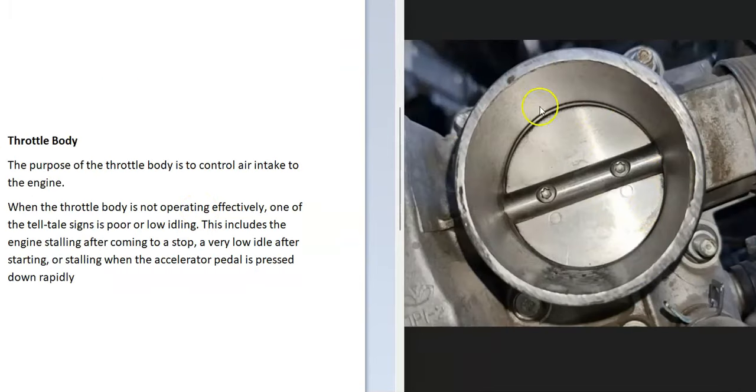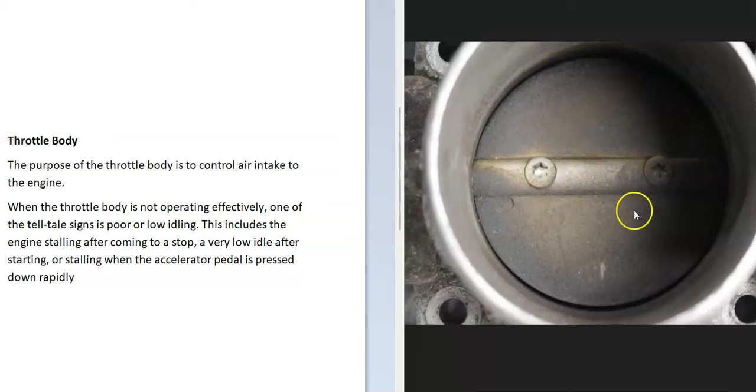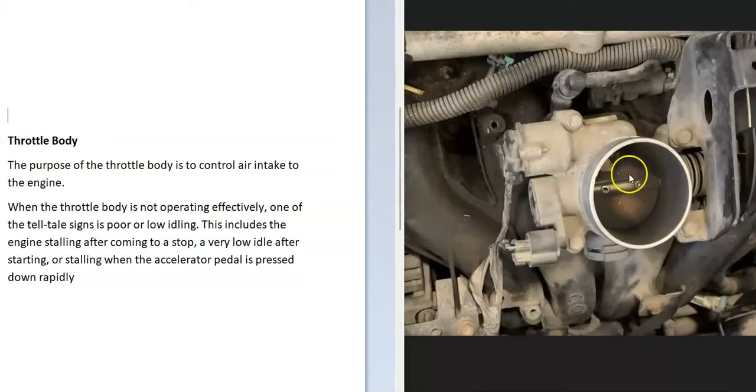The first thing to look at is going to be the throttle body. This is where all the air goes into the engine. It'll have a butterfly that's visible after you remove the air intake hose, and this quite commonly when it gets dirty will cause the idle to be off. This is a very common problem and it'll be the first thing to check - just take off that air intake hose and look down in there and check out this butterfly and the inside.